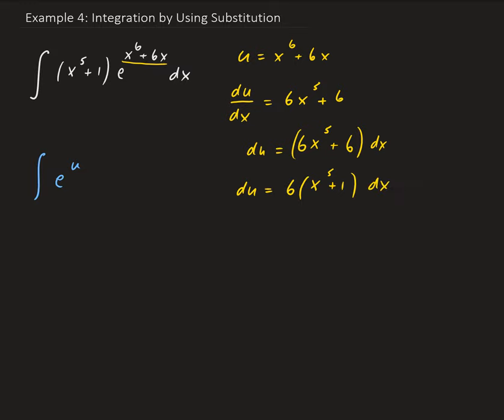So that means we have one sixth du. We don't have a constant six in our function, so we can rewrite this as one sixth du equals x to the fifth plus one dx. So that means this part, x to the fifth plus one and dx, will be written as one sixth du.